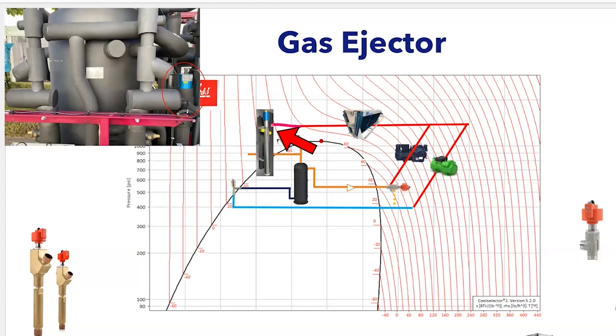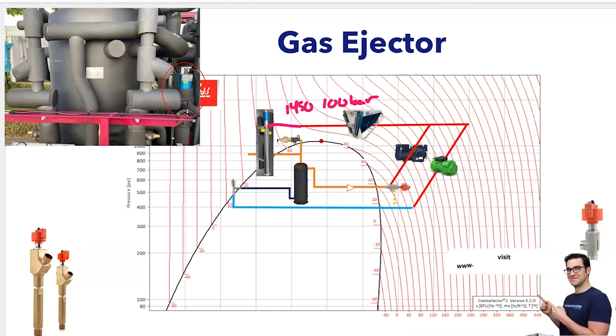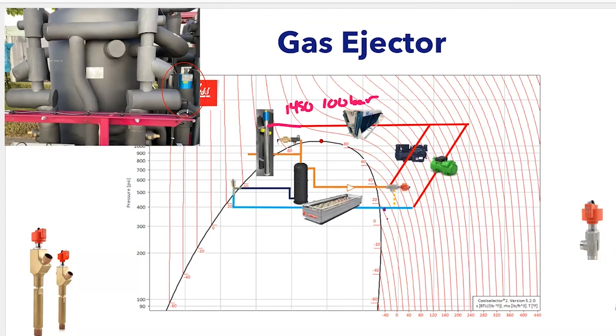This would come into the ejector. You get this high pressure gas coming in here, say 1450 PSI, 100 bar. That's coming down our drop leg. From our medium temp, we're going to take the suction gas and do a loop around here. Now all this suction gas leaving those medium temp evaporators will go into this ejector.